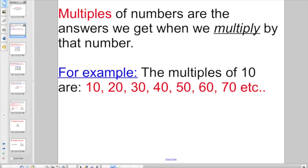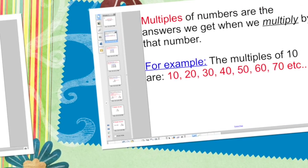A little bit of review right now. Multiples of numbers are the answers we get when we multiply by that number. For example, the multiples of 10 are just 10, 20, 30, 40, 50, 60, 70, etc.